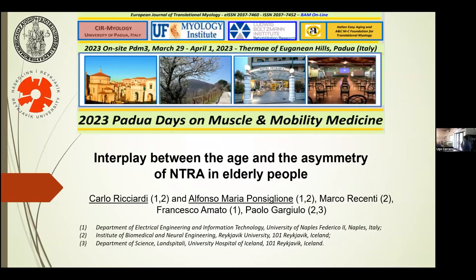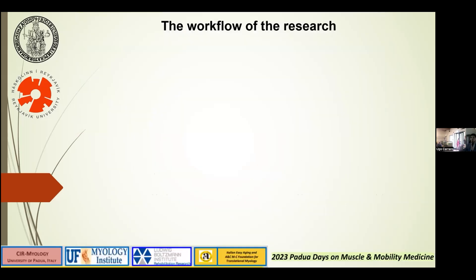Good afternoon. I'm Carlo Ricciardi, here with my friend and colleague Alfonso Maria Ponsiglione. We thank Professor Gargiulo and Professor Carraro for allowing us to be here. We are here to show you the results of our new study — the new phase of the nonlinear trimodal regression analysis parameters, and in particular the interplay between age and asymmetry in elderly people. These are the results of a collaboration between the University of Naples and the University of Reykjavik.